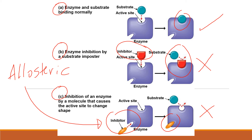This type of inhibitor we refer to as a non-competitive inhibitor. What are some examples of inhibitors? Well, some painkillers that you would take when you have a headache — like ibuprofen — actually inhibit the enzymes that are responsible for sending pain signals to your brain. Basically, that reaction stops and you don't feel the pain.